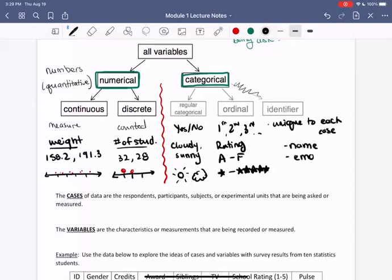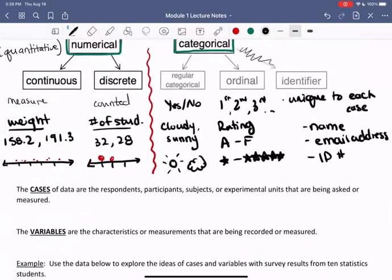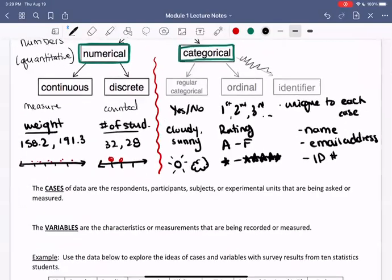So it's unique to each item in your study. So that could include like someone's name, email address. It could also include ID number. So you might collect this data when you're doing the study, but it's unique to each case.